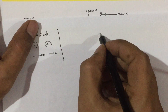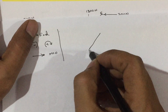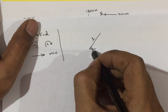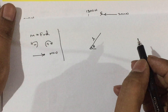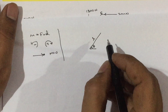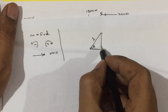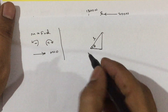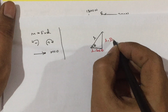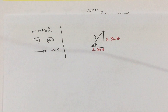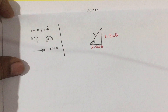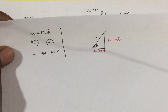Another important concept: if we have an inclined line of dimension L with horizontal angle theta, then the horizontal component of that inclined line is L cos theta, and the vertical component is L sin theta. Just like we resolve inclined forces into components, we can also resolve inclined dimensions into horizontal and vertical components. Once you understand this concept, we will proceed with the problem.